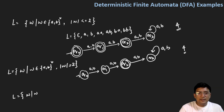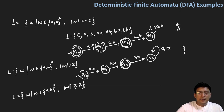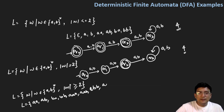Here we are saying that the length of the string is at least two, meaning |w| is greater than or equal to two. The language will accept strings AA, AB, BA, BB, and then any three-length string like AAB, ABB, or four-length strings like AAAA, and so on. Let's design the automata for this.